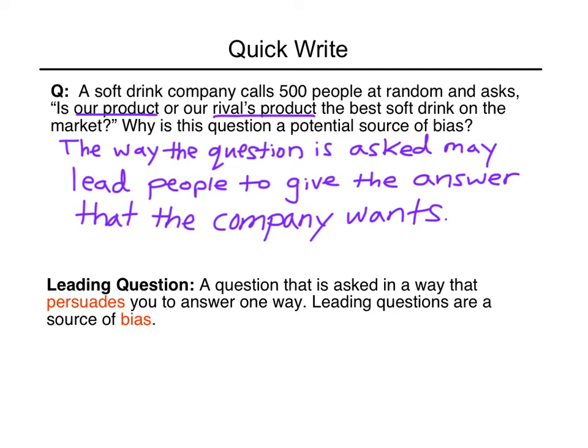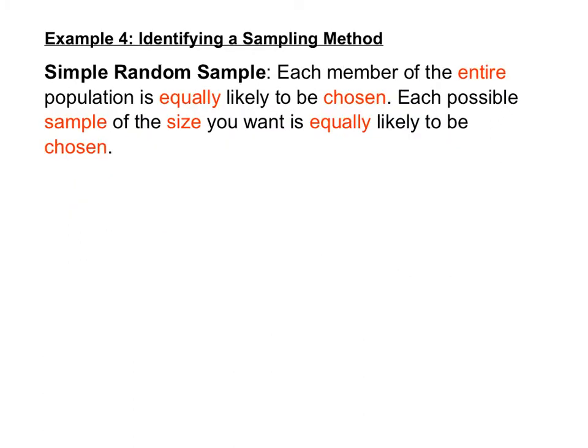Next, let's talk about how you gather a sample. There are various different ways to gather a sample, but we want to make sure our samples are always random samples. A simple random sample is a sample in which each member of the entire population is equally likely to be chosen — meaning each possible sample of the size you want is equally likely to be chosen. So if we wanted a sample of 100, each group of 100 people would be equally likely to be chosen. That is what creates a random sample.